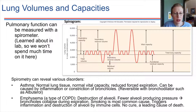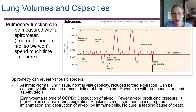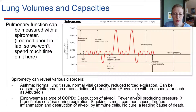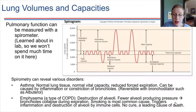Another disorder that can be observed based on spirometry is emphysema. This is a type of chronic obstructive pulmonary disease, and emphysema is most commonly caused by smoking. What takes place with emphysema is that the alveoli are actually being destroyed over time. Fewer alveoli means less pressure up to the bronchioles, and that means the bronchioles are more likely to collapse during expiration.